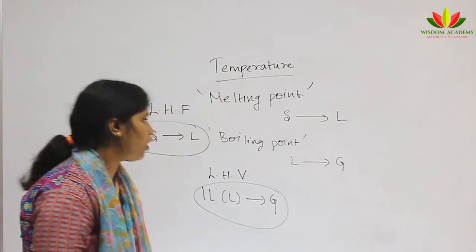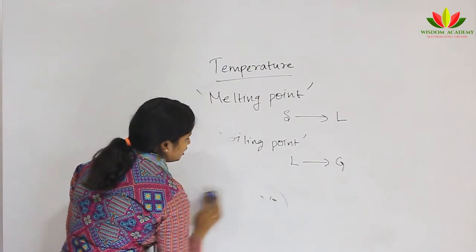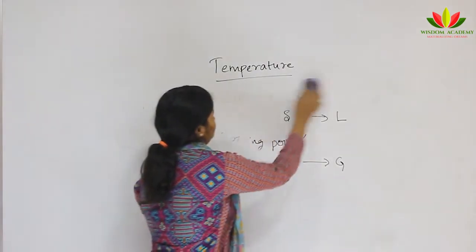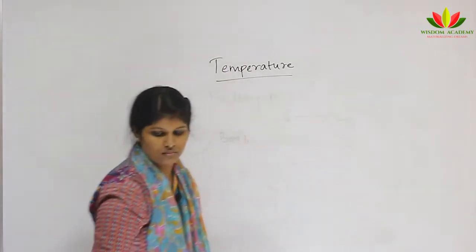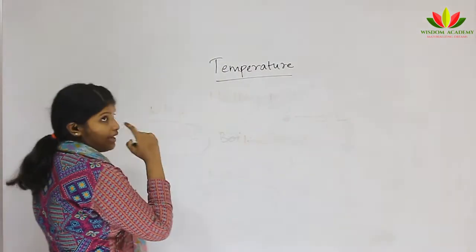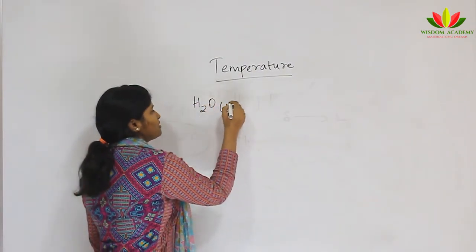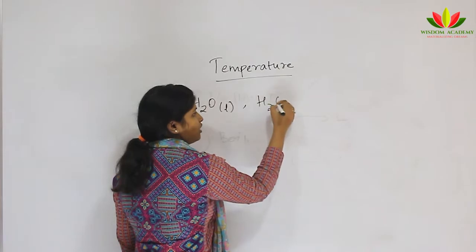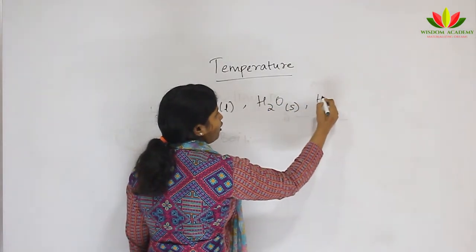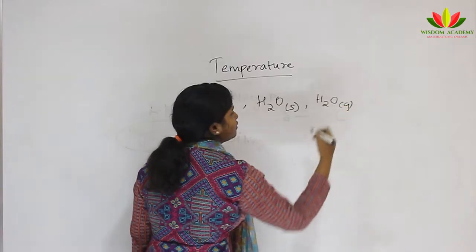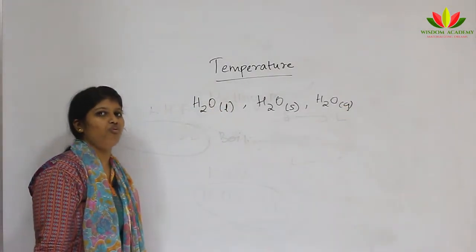Now we will see how to interconvert the three states of matter by changing temperature. We take water as an example. At room temperature it is liquid, at 0°C it is solid, and above the boiling point it is gas. So these are the three states of matter of water.